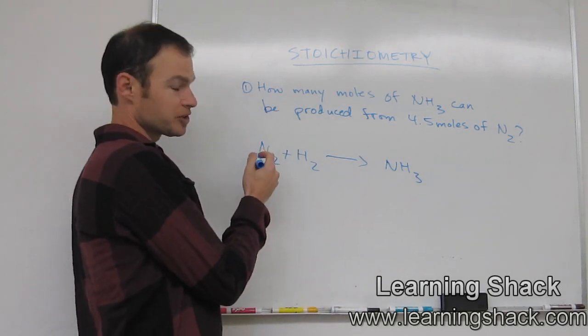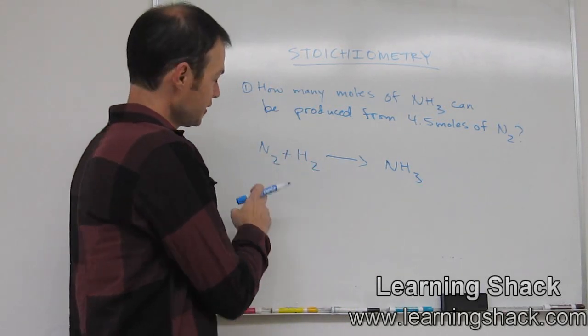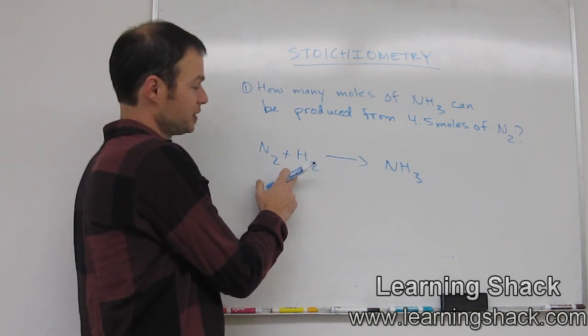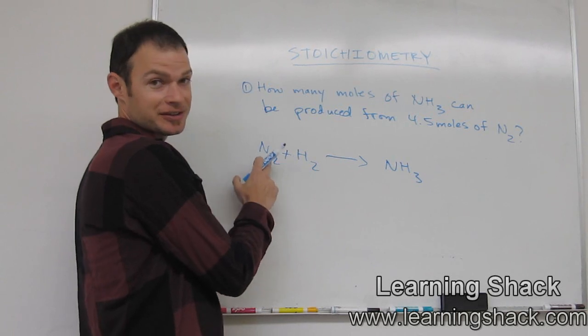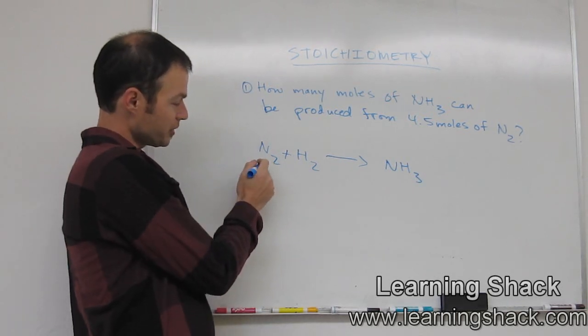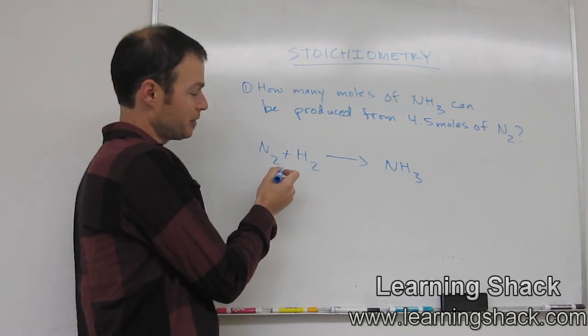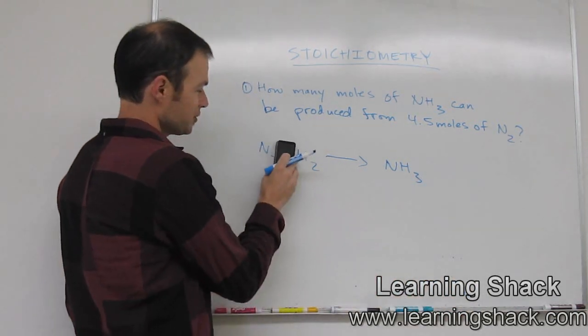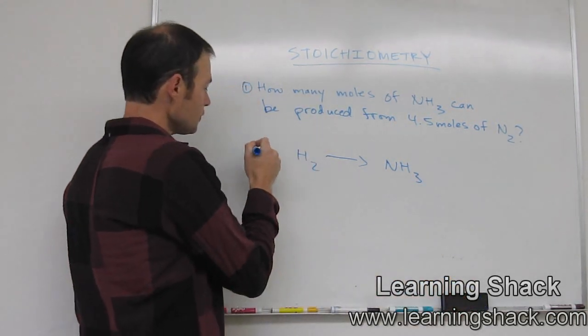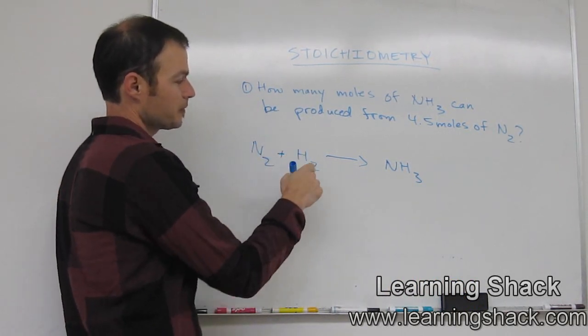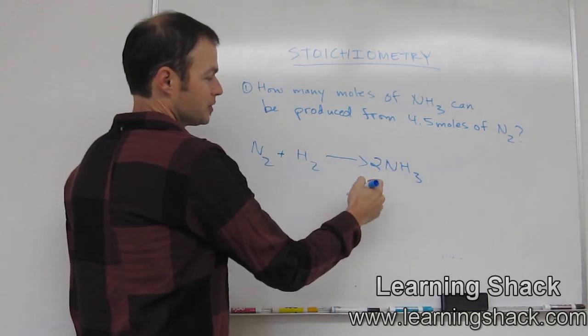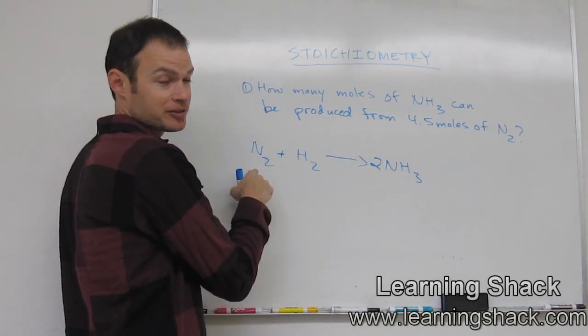For example, what we want to do is we're going to use a coefficient. That's a whole number that we're going to put in front of these guys. The coefficient always goes in front. It doesn't go behind, it doesn't go underneath, it always goes in front. And it multiplies times whatever number of atoms you have here. This number here represents the atoms. So far we have two hydrogens here, we have two nitrogens. So we want to put a two here. Now our number of nitrogens are balanced.